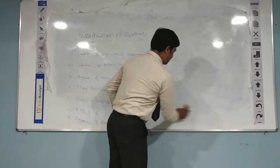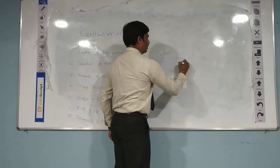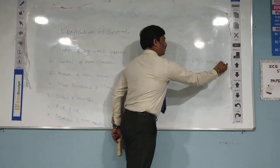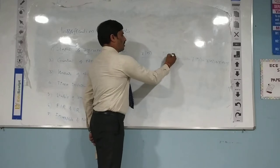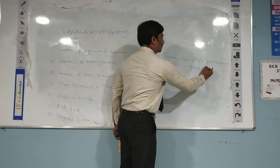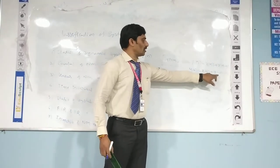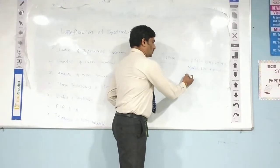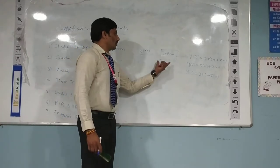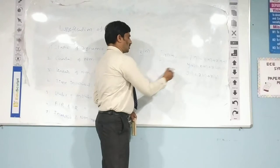Next is causal and non-causal systems. The output of a causal system depends on present and past inputs only. For example, y(n) = x(n) + x(n-1). Similarly, y(1) = x(1) + x(0). The output depends on present and past inputs but does not depend on future inputs, so it is a causal system.